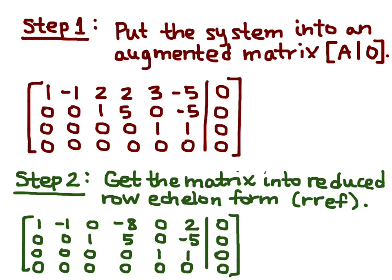The reduced row echelon form is: 1, negative 1, 0, negative 8, 0, 2, 0 in the first row; 0, 0, 1, 5, 0, negative 5, 0 in the second row; 0, 0, 0, 0, 1, 1, 0 in the third row; and then a row of all zeros on the bottom.